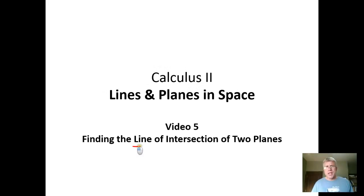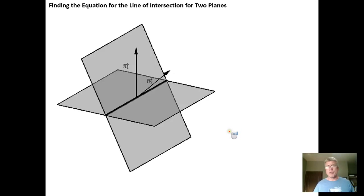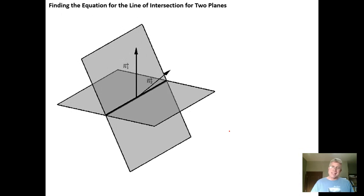In this video we're going to find the line of intersection of two planes — an equation for it. There's more than one way to do this, so I'm going to do it using cross products. It's not the only way to do it. From a conceptual point of view it's the way that I prefer, but here's the basic idea.